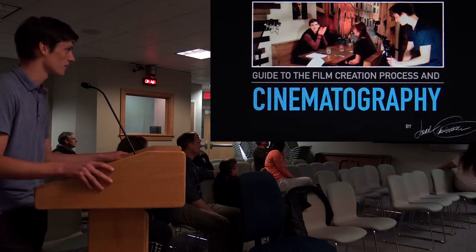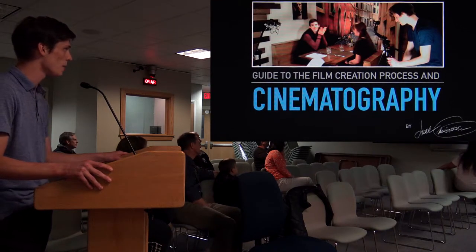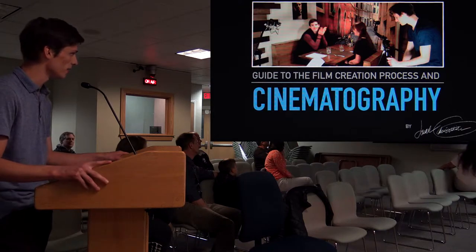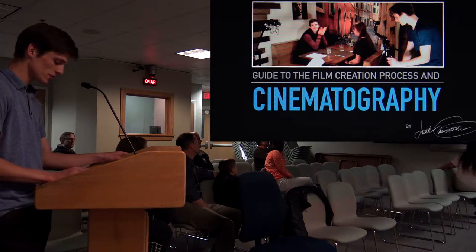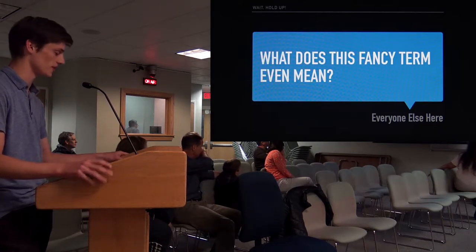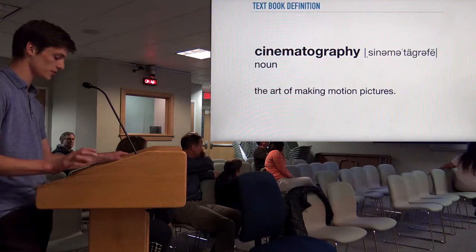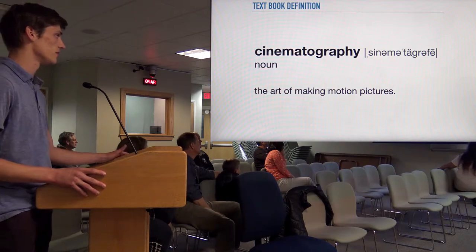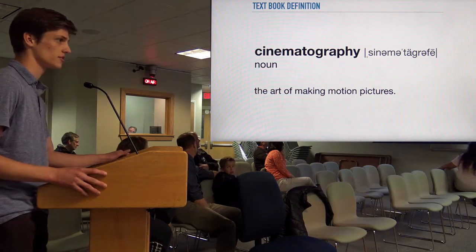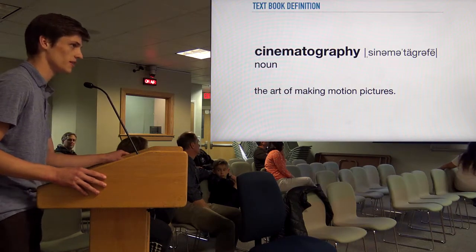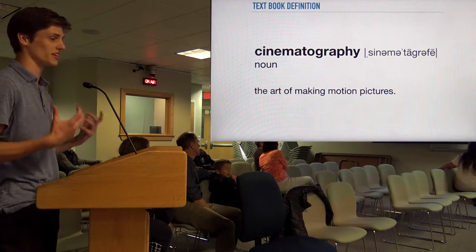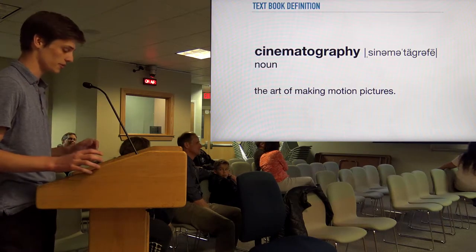This right here is a picture of us on set, actually, at a Mista restaurant in Kittery out by the outlets. Starting off — what is cinematography? What does it mean? The textbook definition of cinematography is the art of making motion pictures. But those six words are simplified beyond belief. I'm going to go over with you mostly everything you can think of that has to do with cinematography.